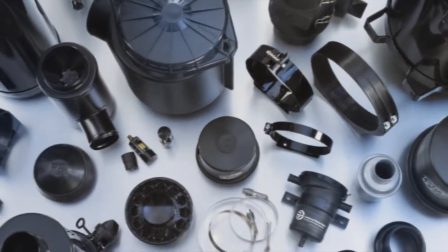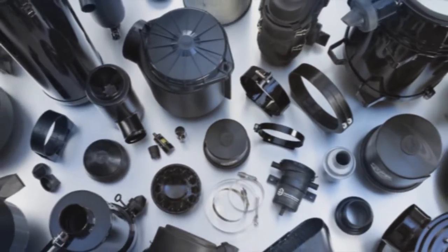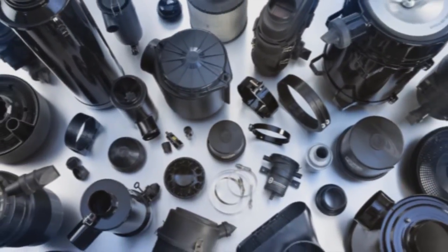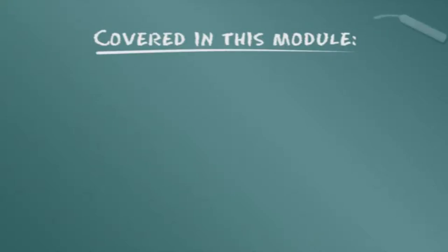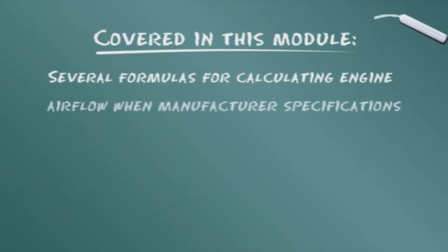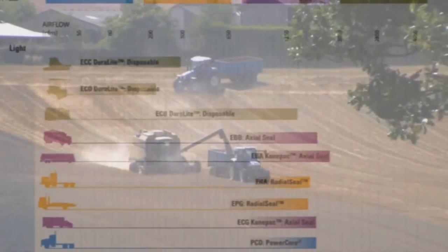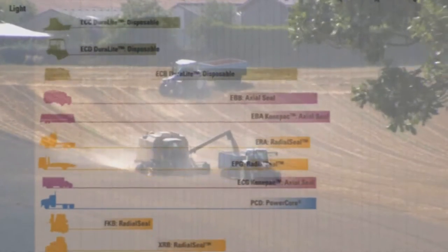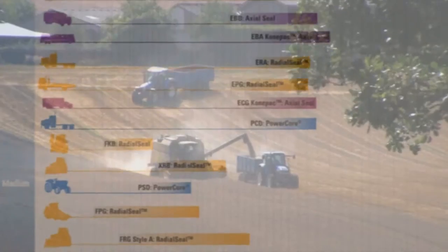This companion module to module A2A provides more technical detail and hands-on guidance in the Donaldson air cleaner selection process. This module also contains several formulas for calculating engine airflow when engine manufacturer airflow specifications are not available. The color-coded Donaldson air cleaner selection chart is a way to visualize the entire air cleaner range for all dust conditions.